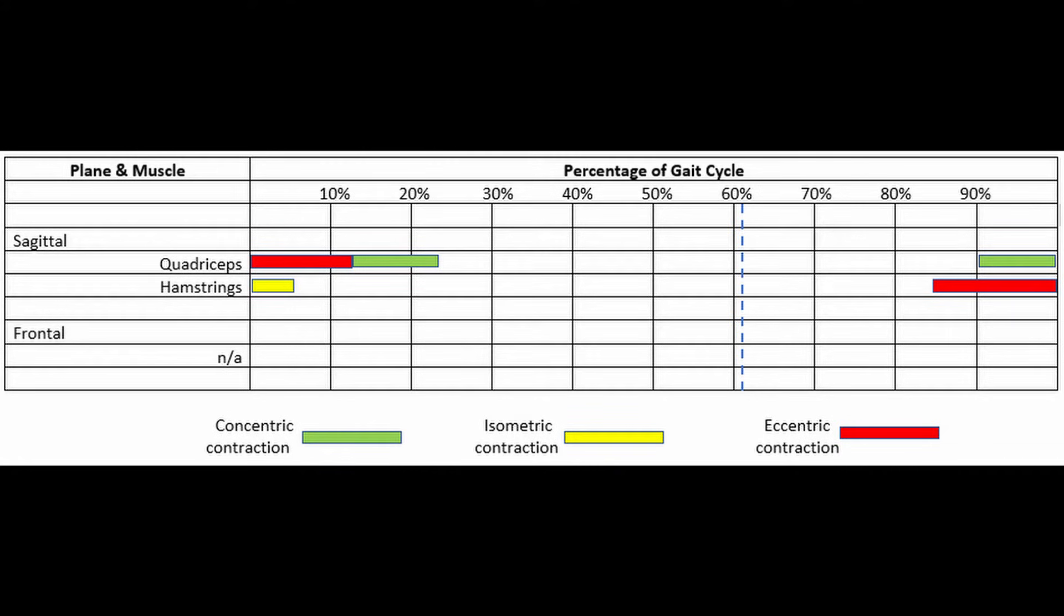While there's a small bit of movement that occurs in the transverse plane at the knee, we're mostly concerned with what's happening in the sagittal plane. During initial contact and our loading response, our quadriceps are primarily contracting eccentrically to absorb shock as the knee flexes slightly. Our hamstrings are active only slightly to help stabilize the knee joint.